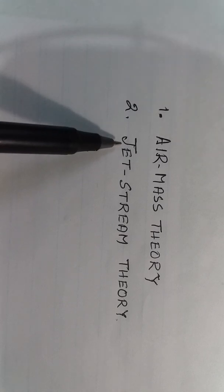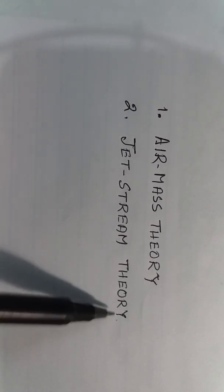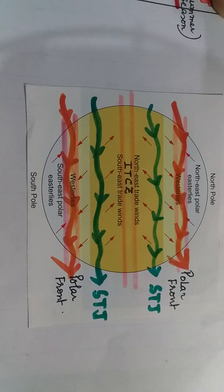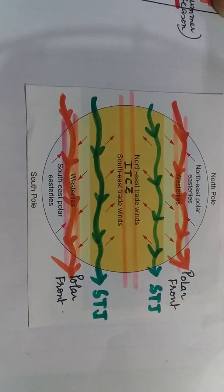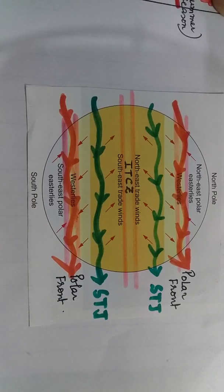Let us take the second explanation — the jet stream theory. Jet streams are high-level winds near the tropopause, and they determine the onset and the departure of the monsoons.